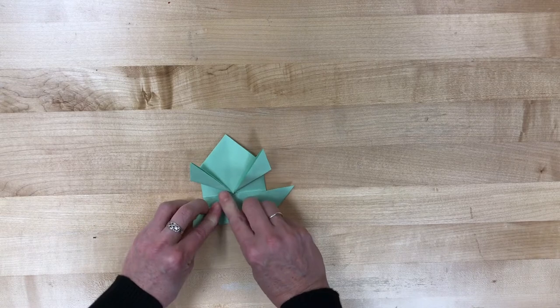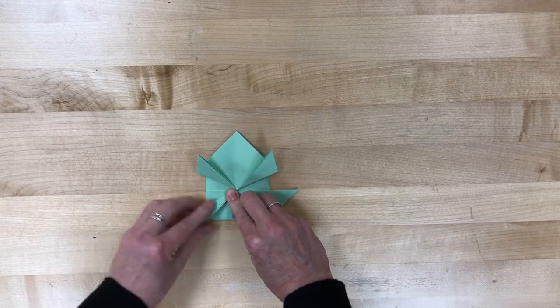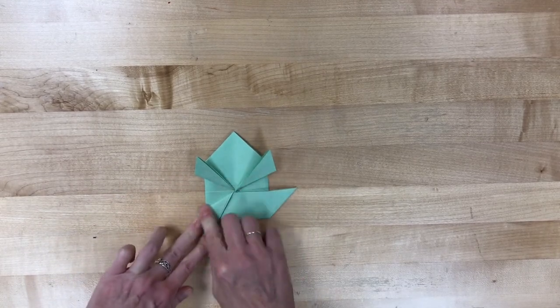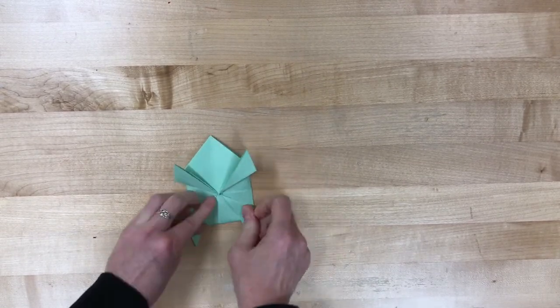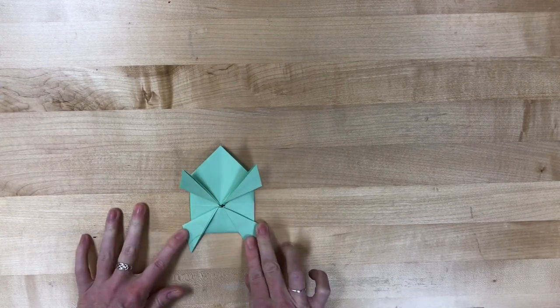Then we're gonna make back legs the same way that we made the front legs. You're gonna pull, not all the way, but just kind of angle that down.